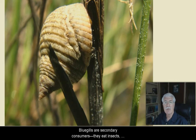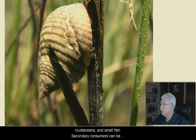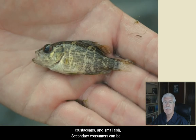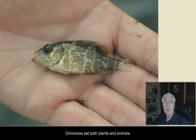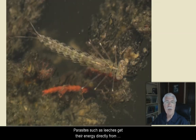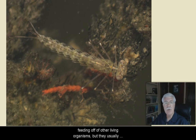Secondary consumers eat primary consumers. Bluegills are secondary consumers. They eat insects, crustaceans, and small fish. Secondary consumers can be carnivores or omnivores. Carnivores eat other animals. Omnivores eat both plants and animals.